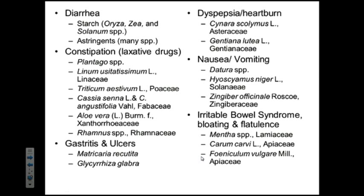This is a more extensive list because we are covering multiple plants. For diarrhea, some of the best therapies come from heavy starch consumption, especially when incorporated into oral rehydration therapy. Important genera would include Oryza, Zea, and Solanum.